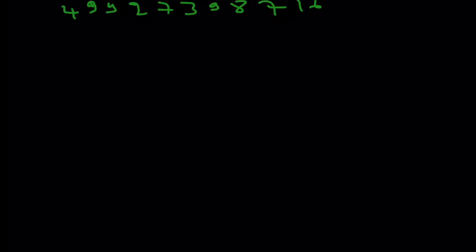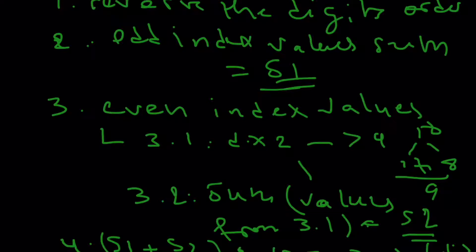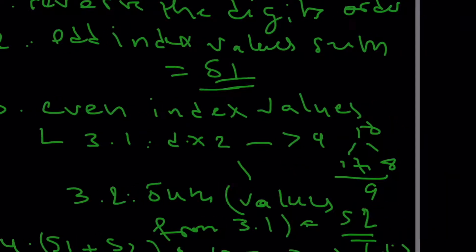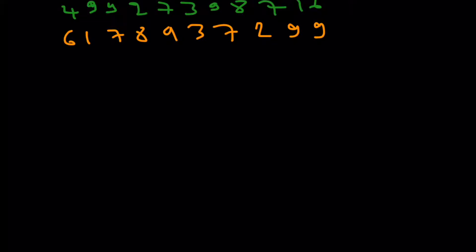So the first step of our algorithm is to reverse the digit order. With that we get: 6, 1, 7, 8, 9, 3, 7, 2, 9, 9, 4.